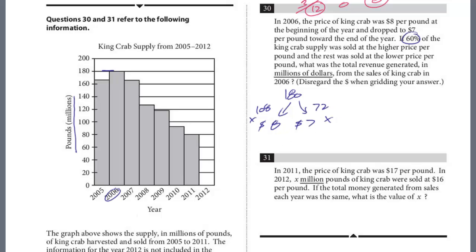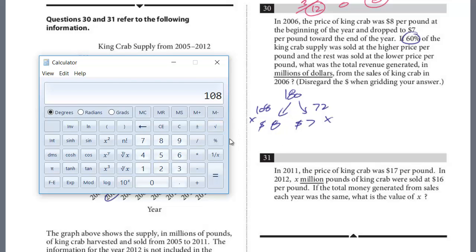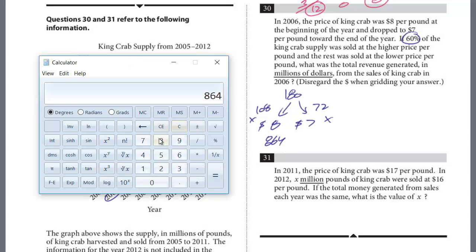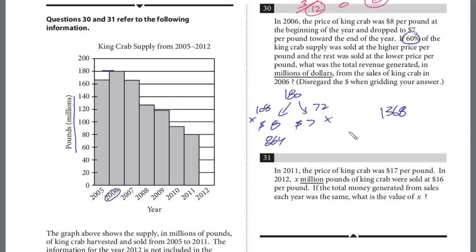And so we just multiply these both out and add them together. So 108 times 8, that is 864. That's the revenue from $8 a pound. And then 72 times 7, this is the revenue at $7 a pound, 504. And I'm just going to add it to 864, and that is the answer, 1368. This is what you would grid in. And we're going to do the last question, number 31.